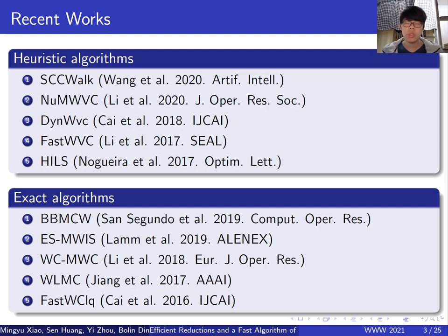The heuristic algorithms can get a high-quality solution quickly but don't ensure optimality. Exact algorithms can ensure optimality. However, most exact algorithms just consider the complementary problem, maximum weighted clique.